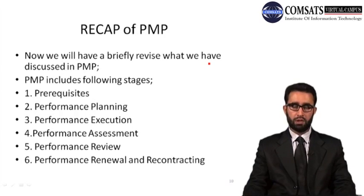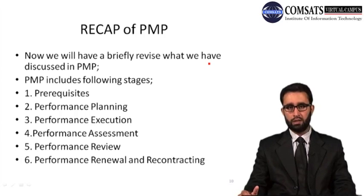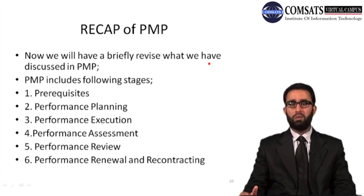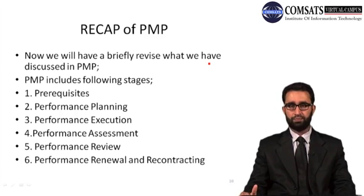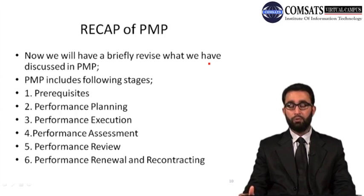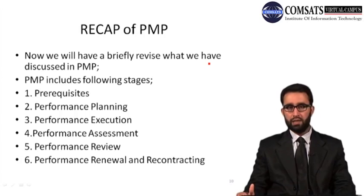Now let's do a brief recap of the performance management process so that what we have learned can be consolidated. The performance management process includes the following stages: number one, prerequisites; number two, performance planning; number three, performance execution; number four, performance assessment; number five, performance review; and number six, performance renewal and re-contracting. These six stages complete the performance management process.